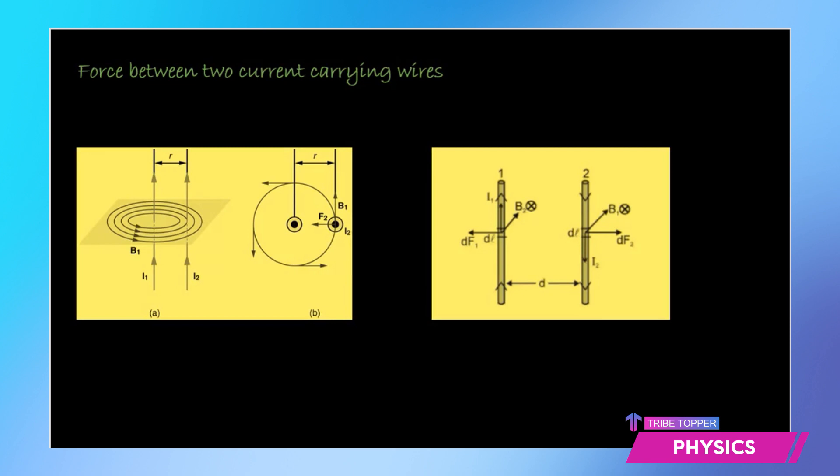When we place two wires parallel to each other, as you can see here, these are two wires placed parallel to each other and they carry the current in the same direction. As indicated by these arrows, they carry the current I1 and I2 in the same direction.